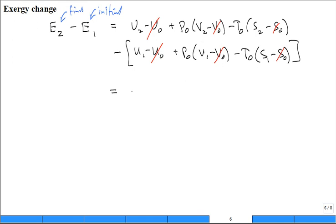We're left with a much simpler result that it's just u2 minus u1 plus p0 times v2 minus v1 minus t0 s2 minus s1. So when you calculate the change in the exergy,